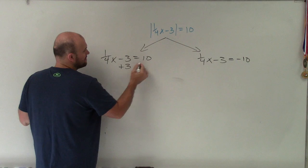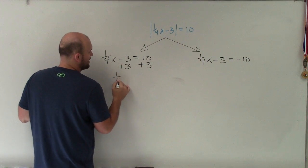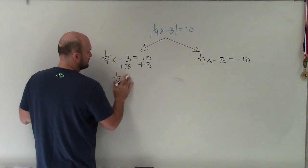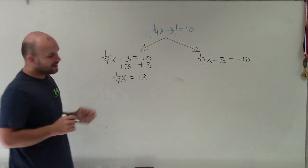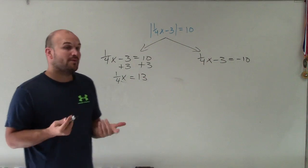First way, let's just add 3, add 3. So therefore, I have 1/4 x equals 13. Now, whenever I want to get rid of a fraction, I can just multiply by the reciprocal.